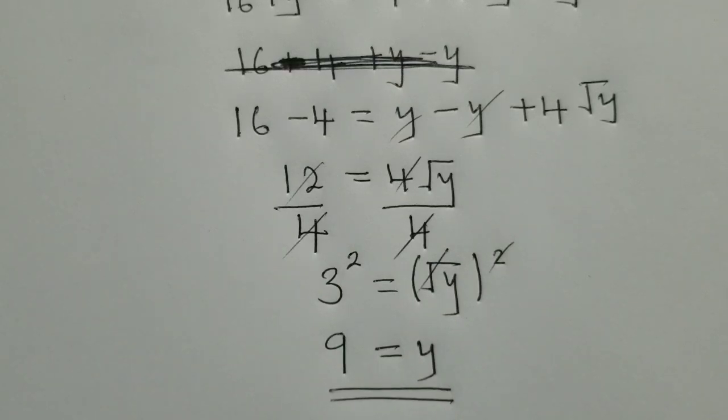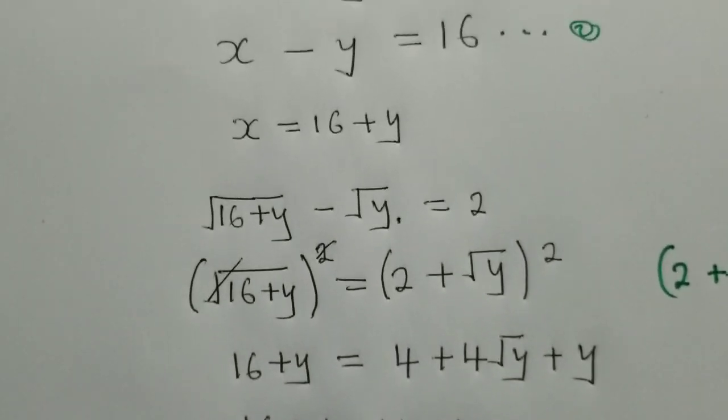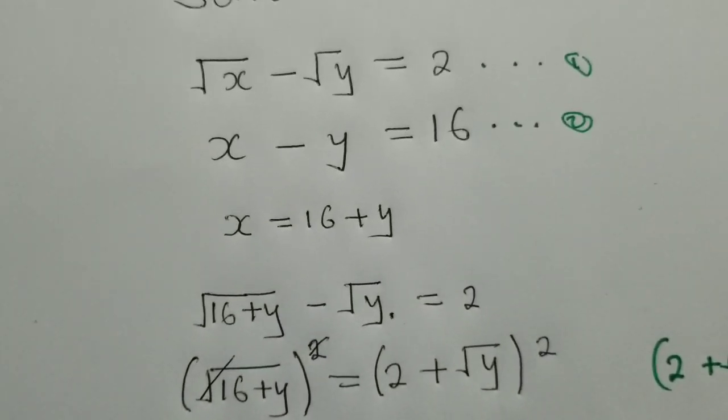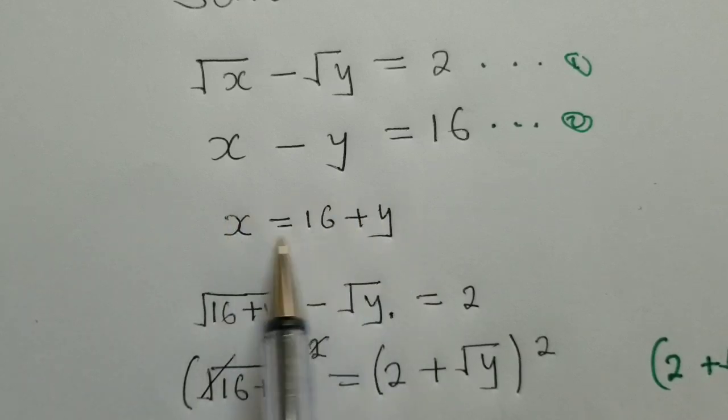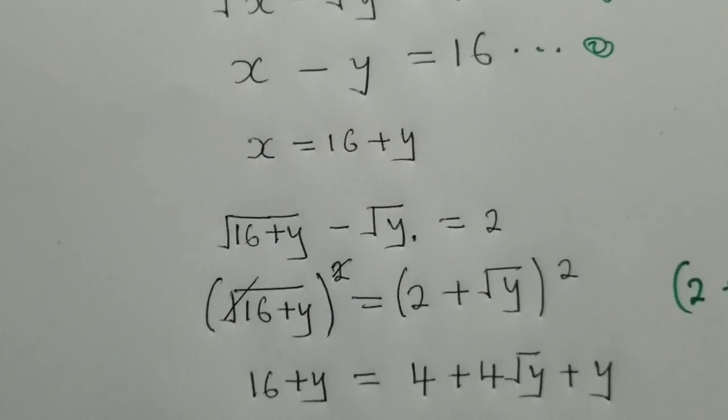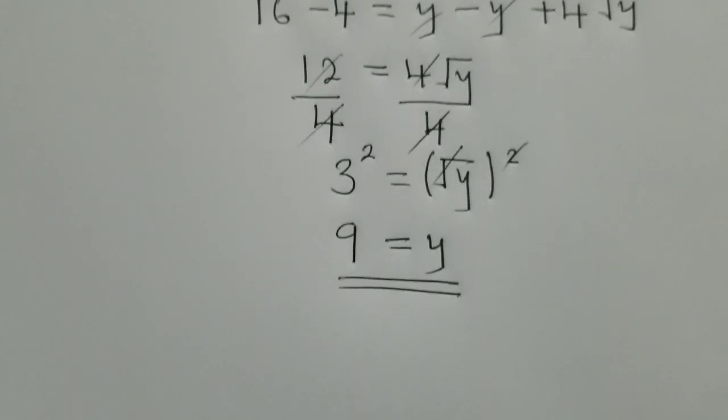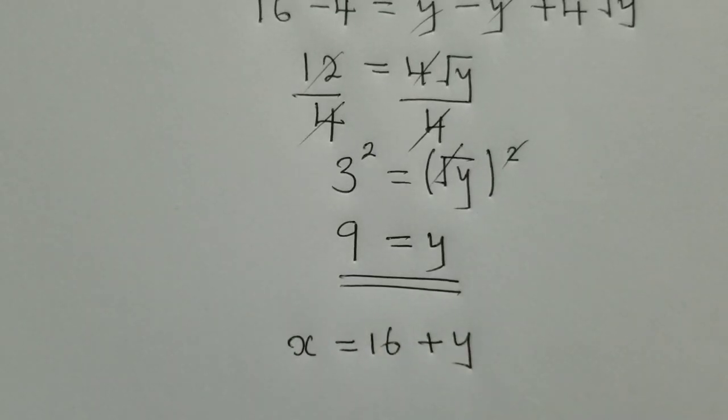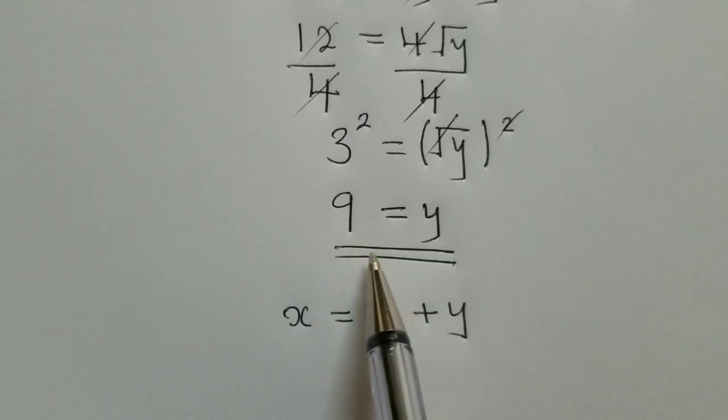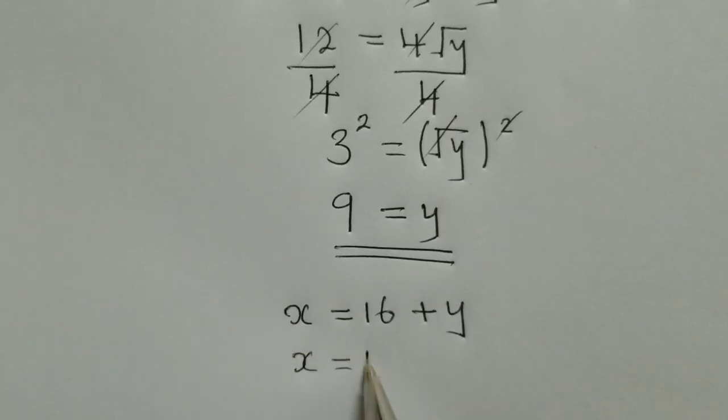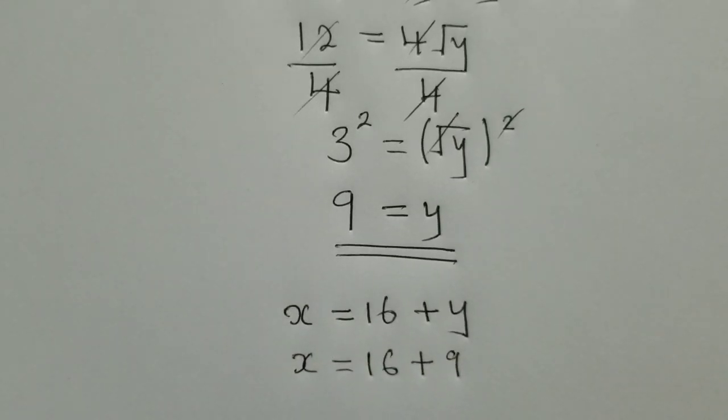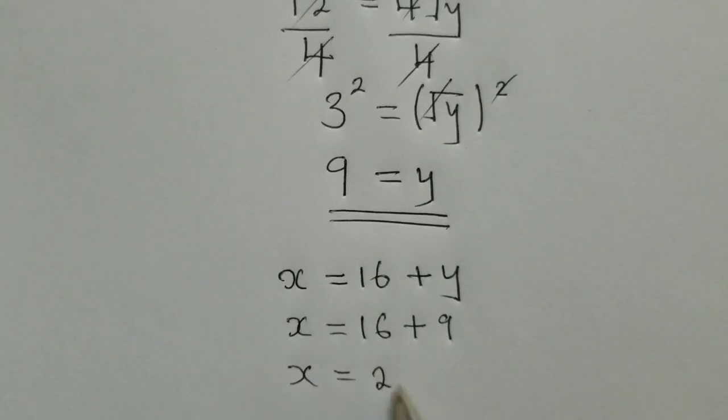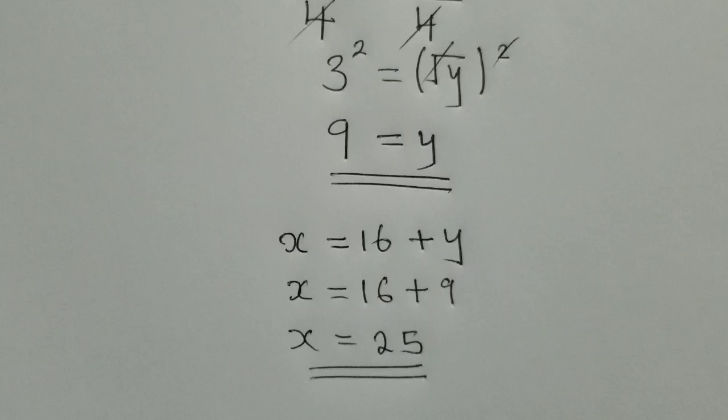Now that we've found the value of y, which is 9, we move back to this point and get x is equal to 16 plus y. We want to solve for x now. Since we have solved for y, we now solve for x. So x would be equal to 16 plus 9. We substitute 9, so x is equal to 25. The value of x is equal to 25. Thank you so much, and bye-bye.